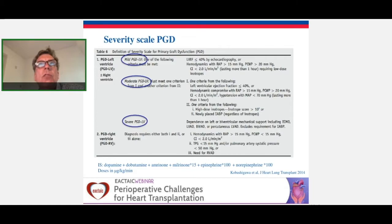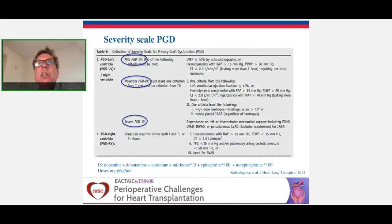For mild left ventricular primary graft dysfunction, one of the following criteria must be met: left ventricular ejection fraction less than 40%, or hemodynamics with right atrial pressure greater than 15, pulmonary capillary wedge pressure greater than 20, and cardiac index less than 2 liters per minute per square meter, requiring low-dose inotropics. For moderate to severe, symptoms are worse and there is a need for an intra-aortic balloon pump or other mechanical circulatory support. For right ventricular primary graft dysfunction, criteria include a transpulmonary gradient less than 15 and the need for a right ventricular assist device.